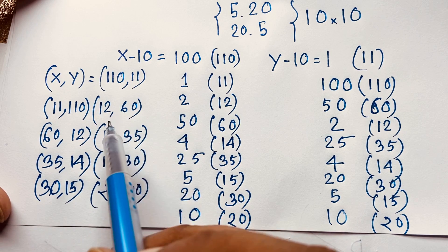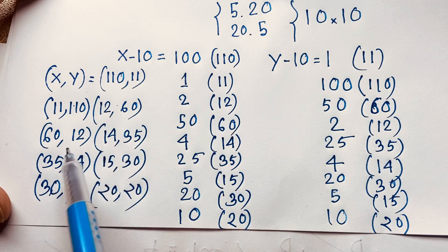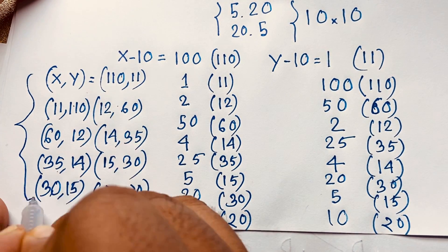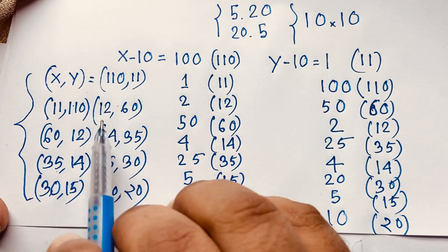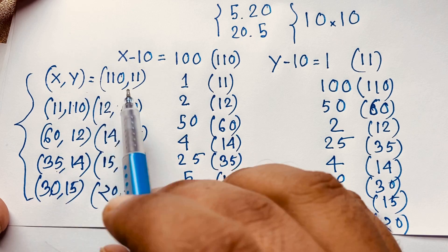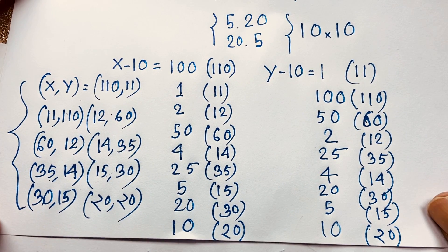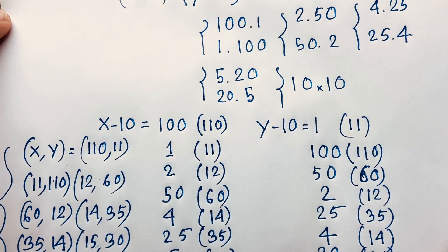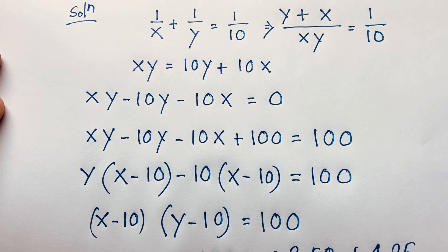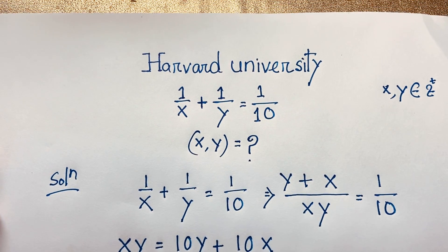So we find our final answer — there are 9 solutions total, counting 1, 2, 3, 4, 5, 6, 7, 8, 9. This is our final answer for this algebra problem. Remember that x and y are positive integers. This is an interesting math problem. Thank you all. If you enjoyed this Math Olympiad question, please subscribe to my channel for other interesting videos. Goodbye, take care everyone, have a good day.